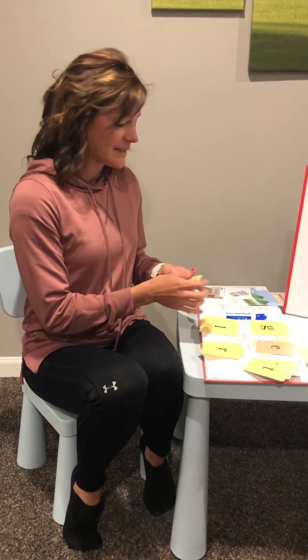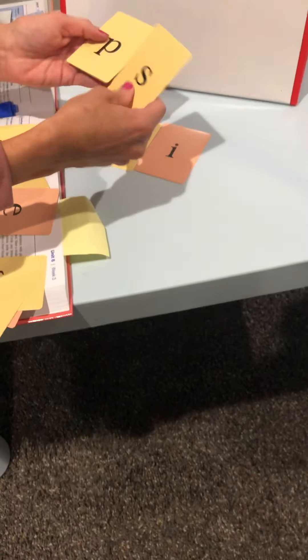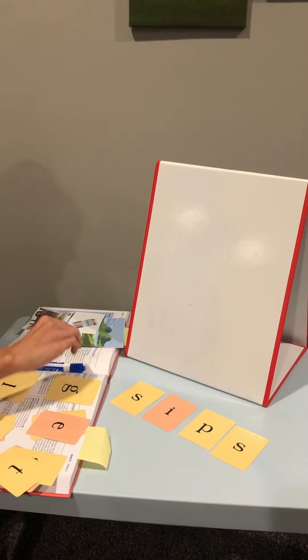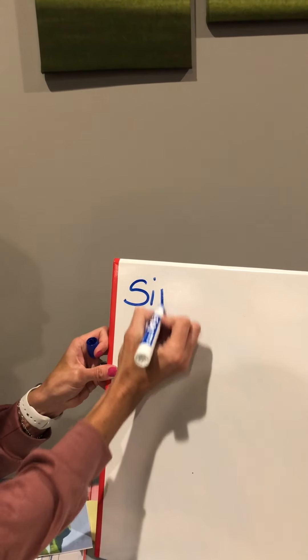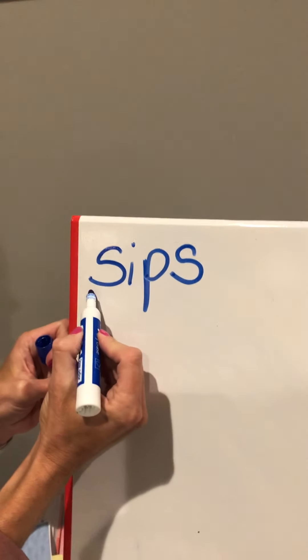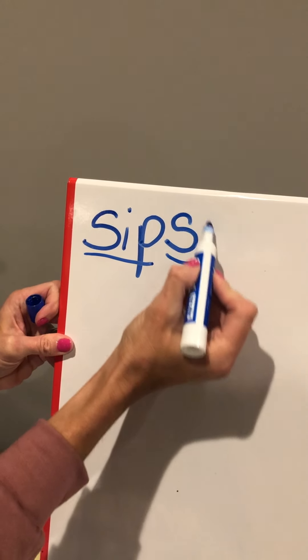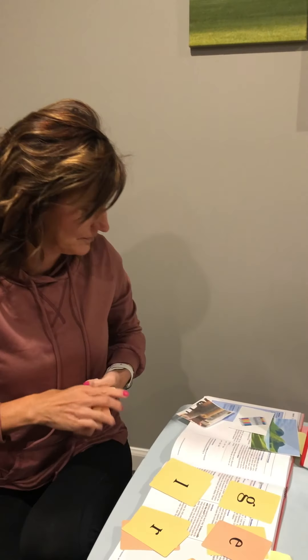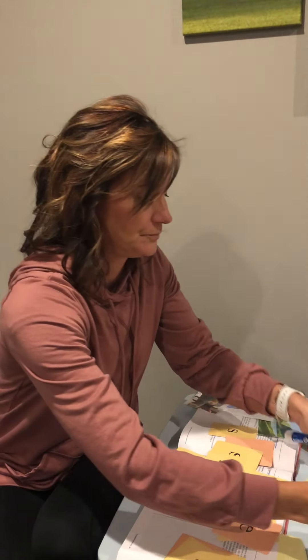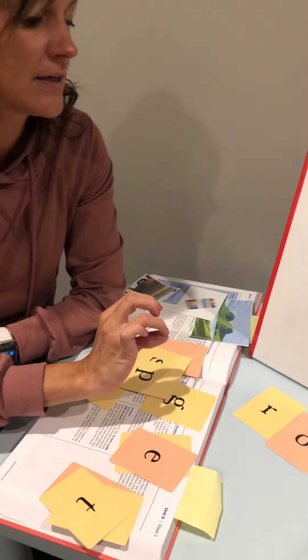Let's start with our first word. First we'll tap it out: sips. Then we'll write it so we can mark it up. Sips. We have to underline our base word — what's our base word? Yes, sip. And then we circle the suffix. Our word is sips, such as he sips his drink.